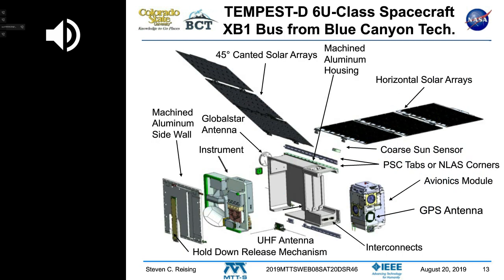Looking more at the 6U CubeSat, we see the XCP-1 bus from Blue Canyon Technologies. The bus provides six solar panels — three deployed horizontally and three at 45 degrees — providing enough power to charge the battery in the avionics module.